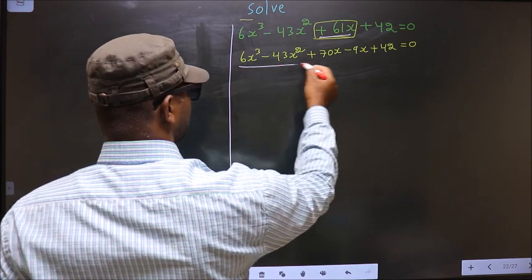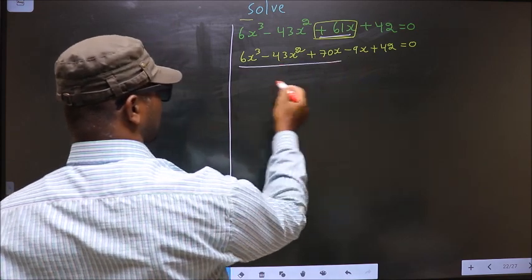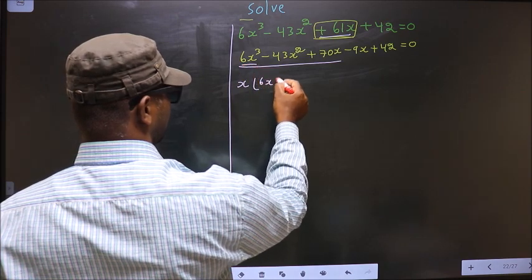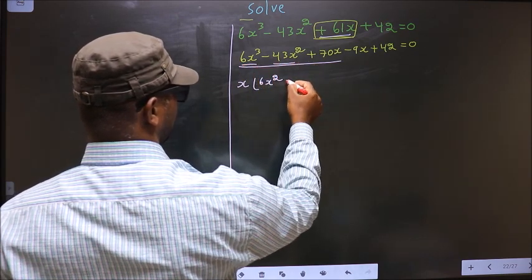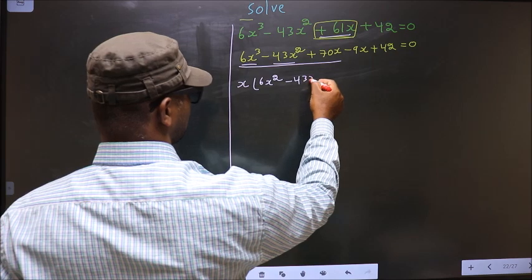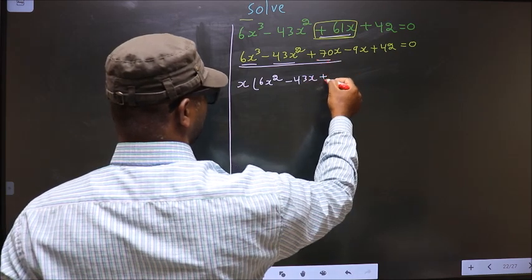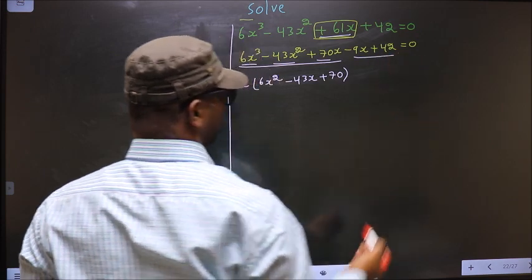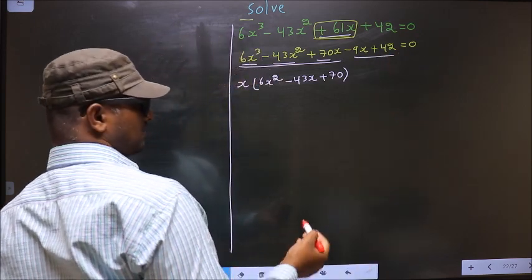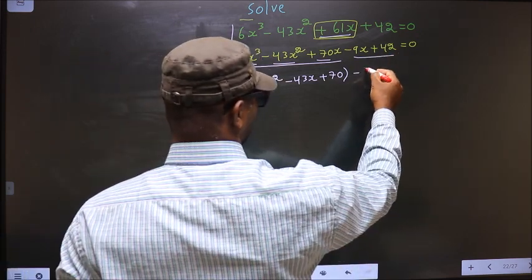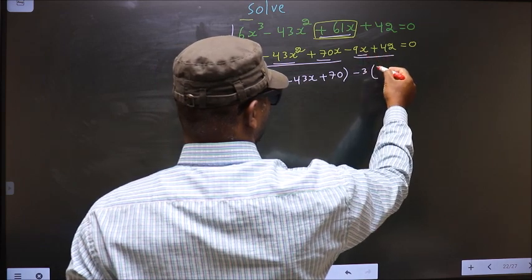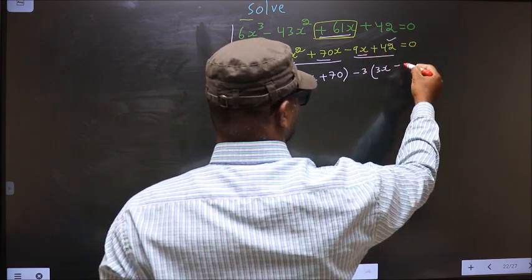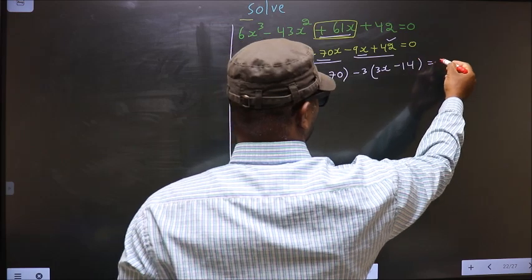From these 3 terms, what can you take out common? x. So here you get 6x² and here you get minus 43x and here you get plus 70. Now from these 2 terms, what can you take out common? Minus 3. So here you get 3x and here you get minus 14, equal to 0.